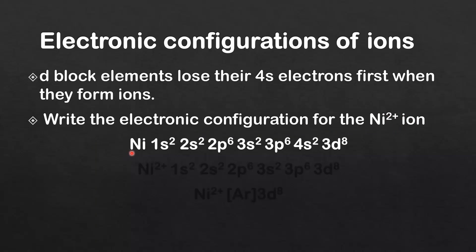So here's the full electronic configuration for the nickel atom: 1s2, 2s2, 2p6, 3s2, 3p6, 4s2, 3d8. When d-block elements form ions, they lose these 4s electrons first.